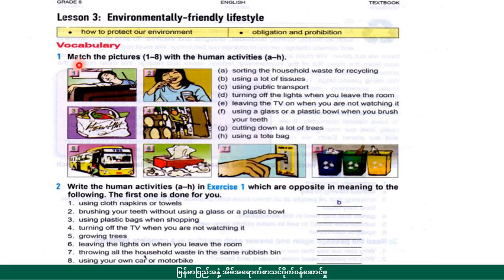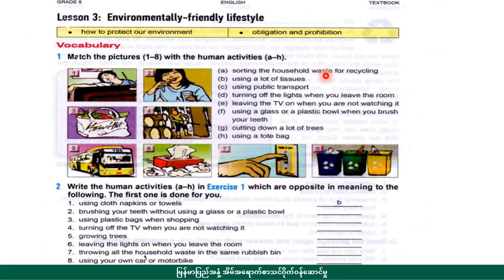Match the pictures 1 to 8 with the labels A to 8. For example, we are going to take a look at A, B, C, D, E, F, G, H. We are going to take a look at the household waste for recycling.